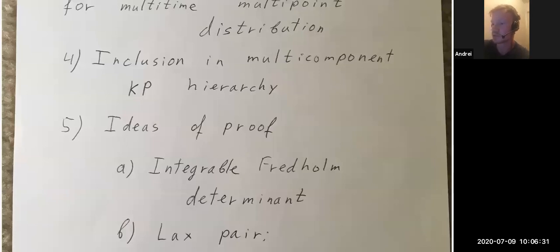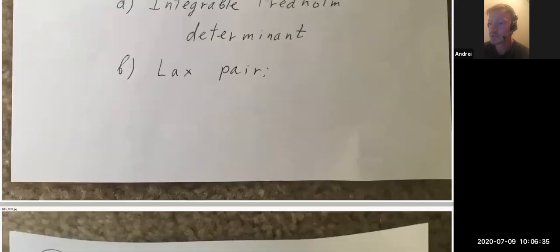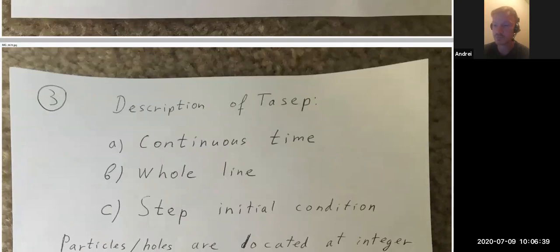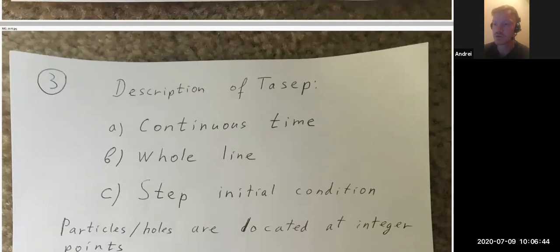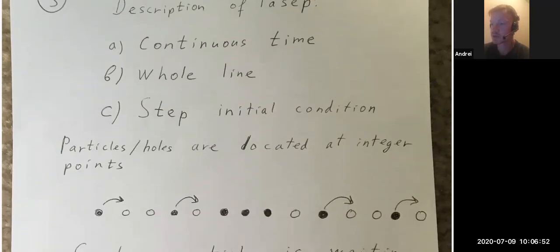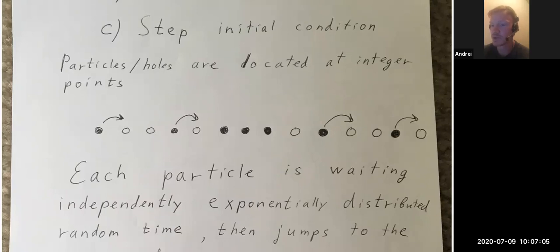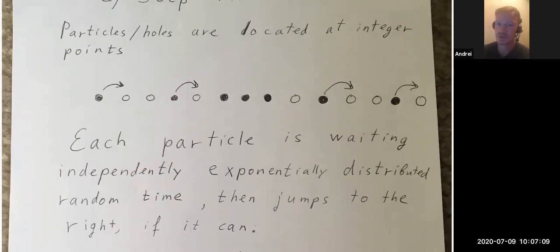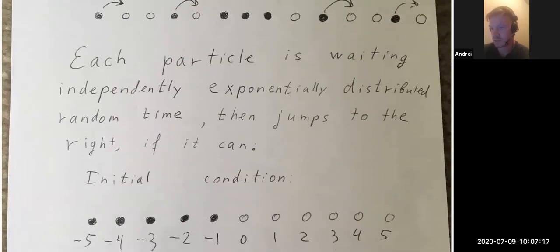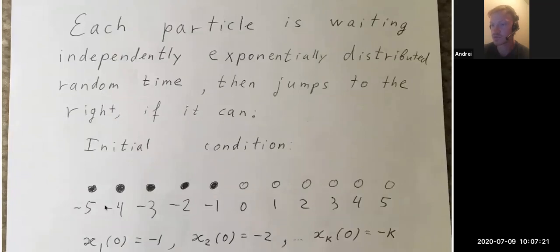We consider continuous-time TASEP on the whole line, restricted to the step initial condition. Particles are located at integer points and jump to the right, each particle waiting an independently exponentially distributed random time, then jumping right if the site on the right is not occupied. The initial condition places particles at positions −1, −2, −3, ... with no particles to the right.